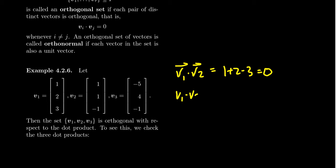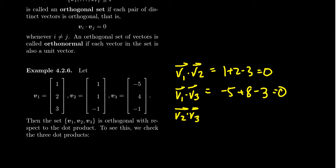If I take v1 dot v3, I get negative 5 plus 8 minus 3, which is likewise zero, so v1 and v3 are also an orthogonal pair. But to be an orthogonal set, every pair must be orthogonal. The last pair to check is v2 and v3. It doesn't matter who goes first — even with complex vectors, if you get zero one way, you'll get zero the other way. So v2 dot v3 gives negative 5 plus 4 plus 1, which is zero. This confirms it is an orthogonal set.